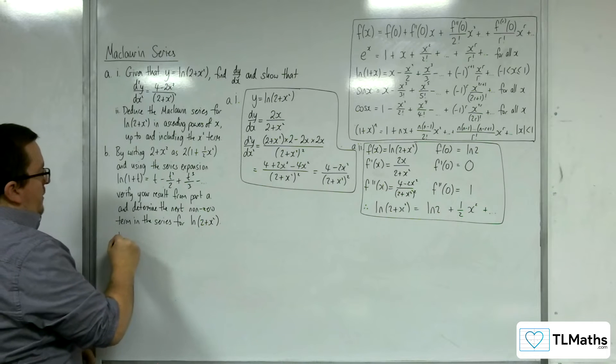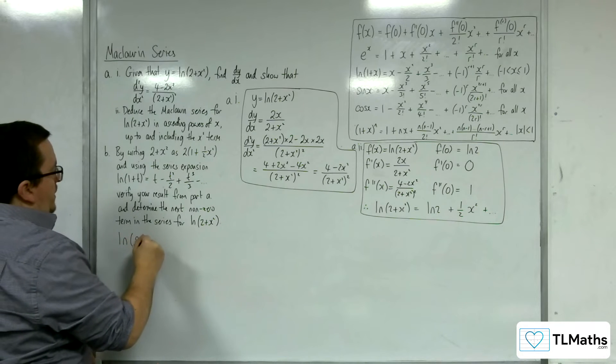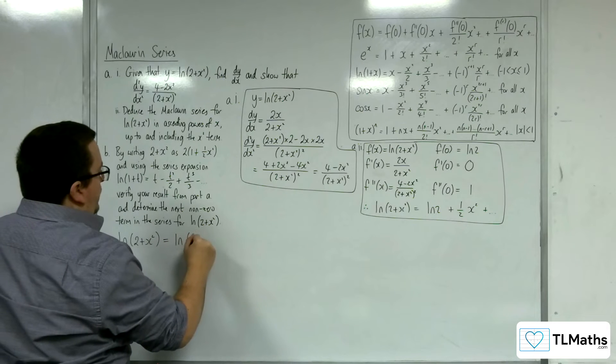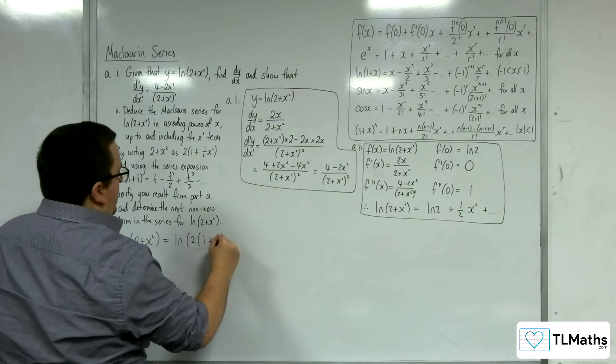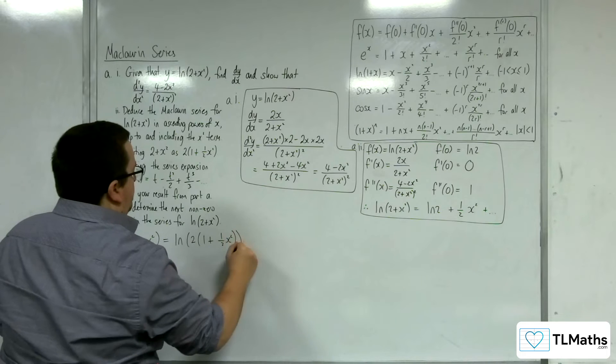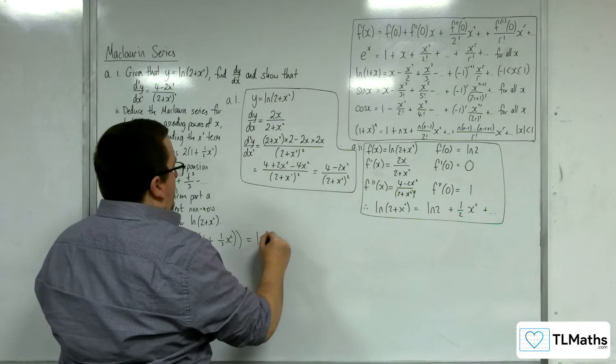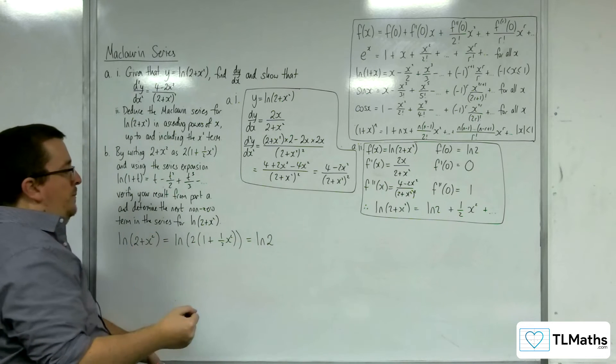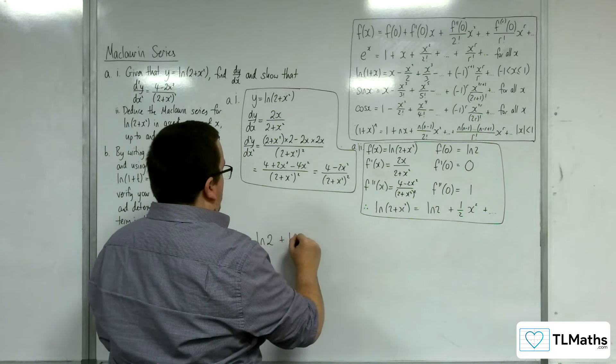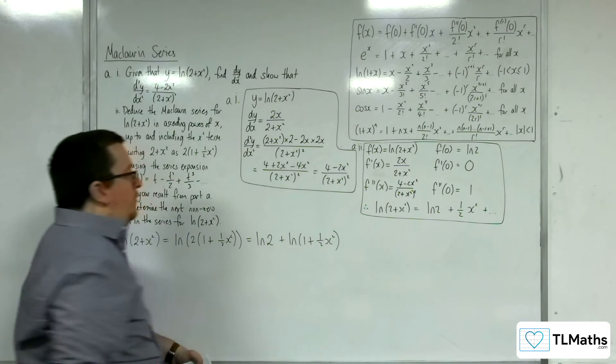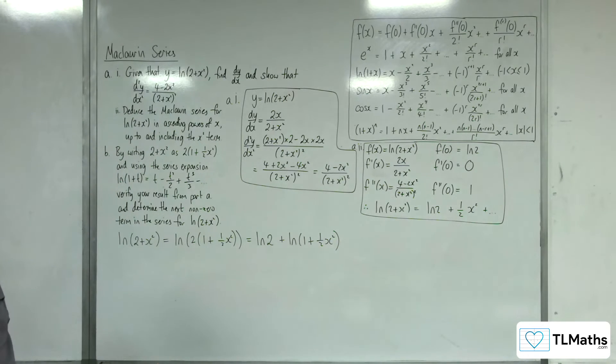Okay, so it's told us to write that. So the idea here is that we've got log of 2 plus x squared, and I'm going to rewrite that as log of 2 lots of 1 plus 1 half x squared. That allows me to break the logarithm apart. So we can write it as log of 2 plus log of 1 plus 1 half x squared. So we can use our log laws in order to do that.